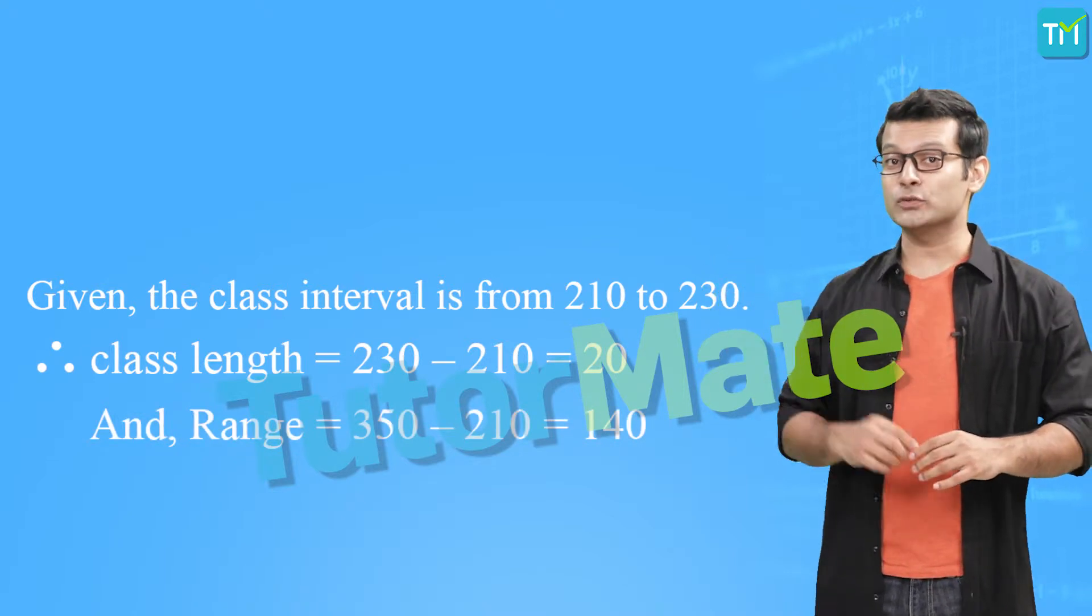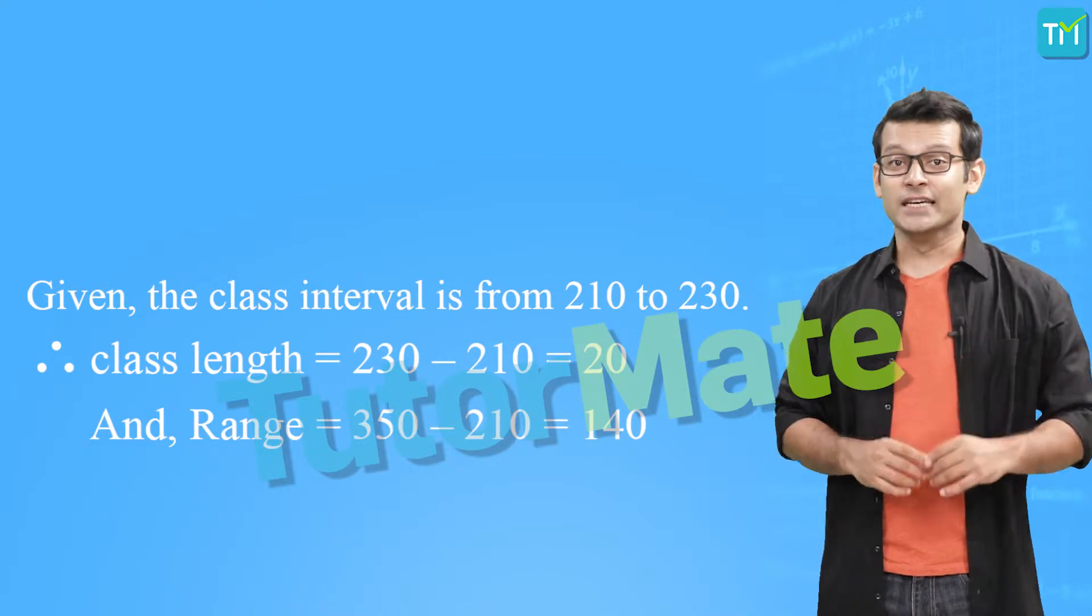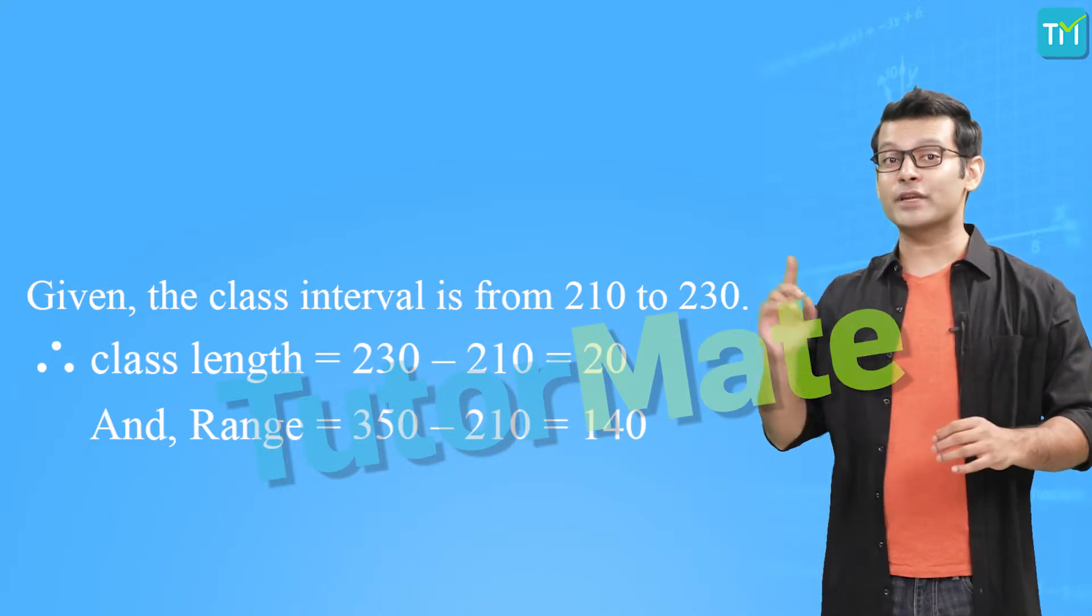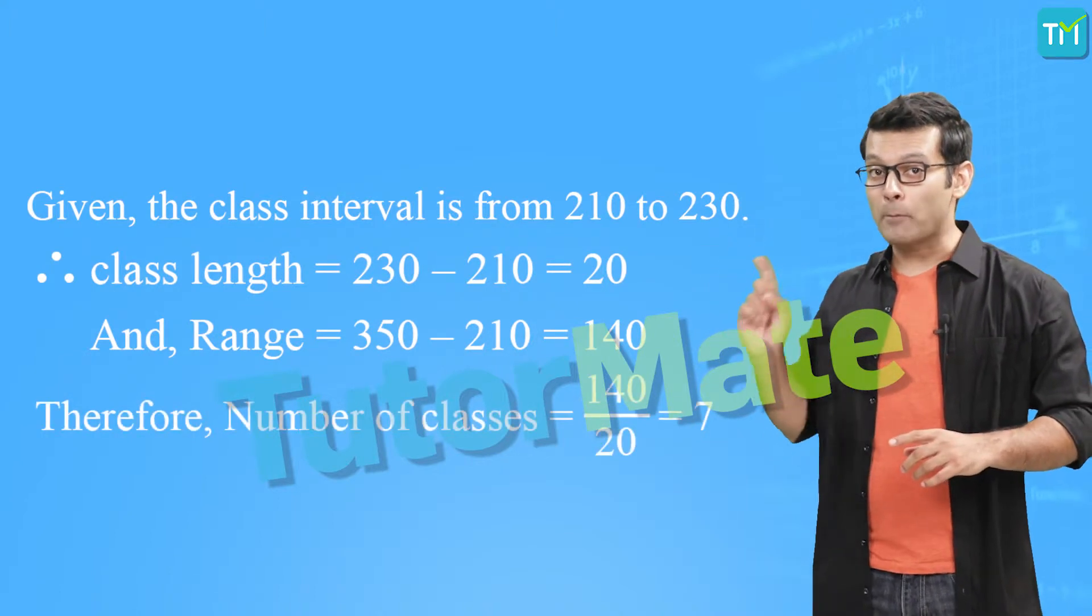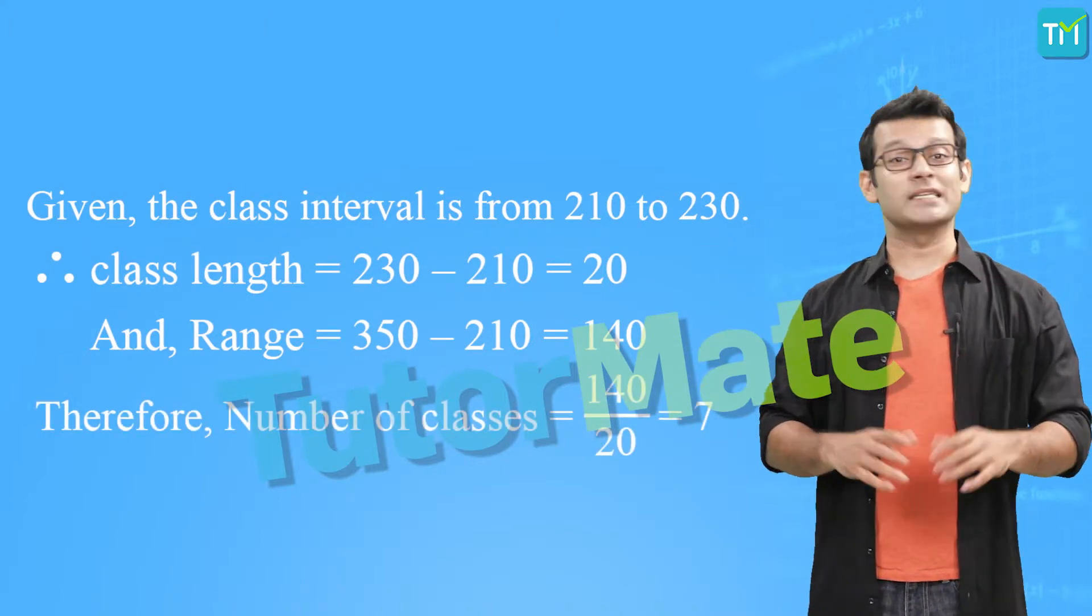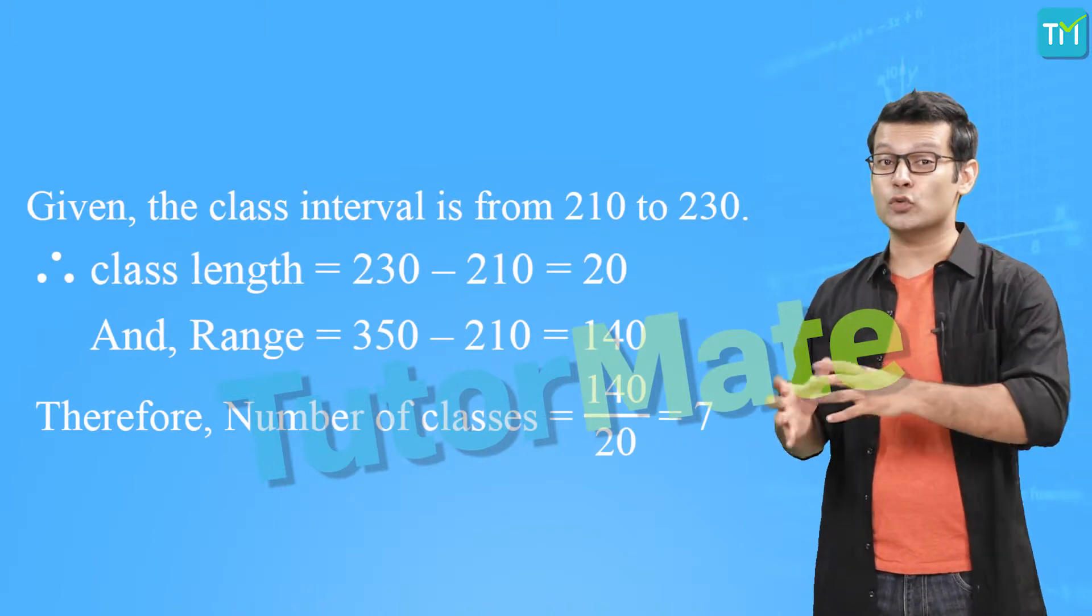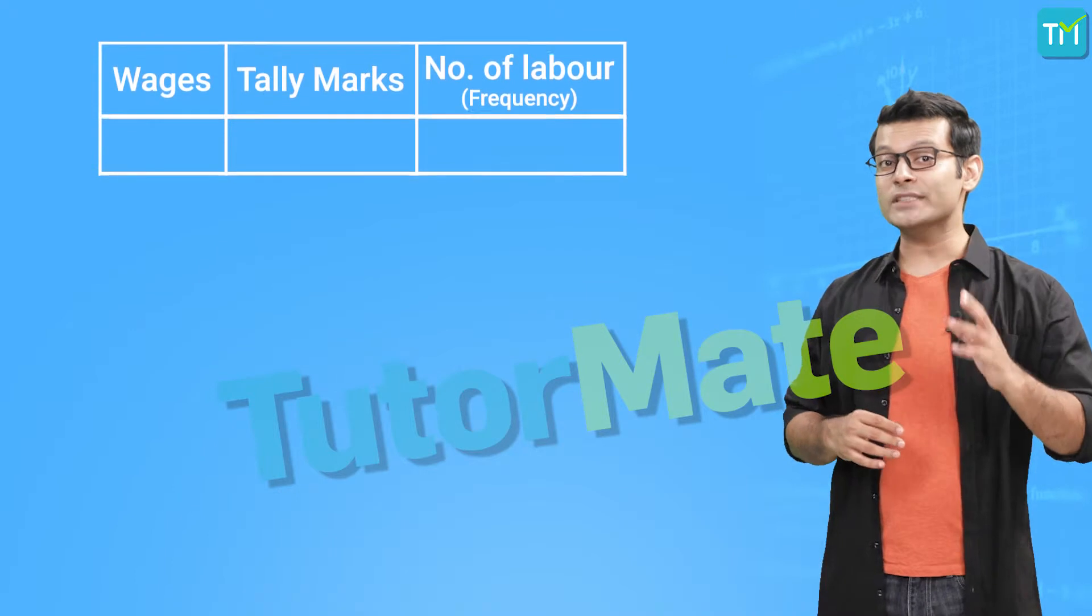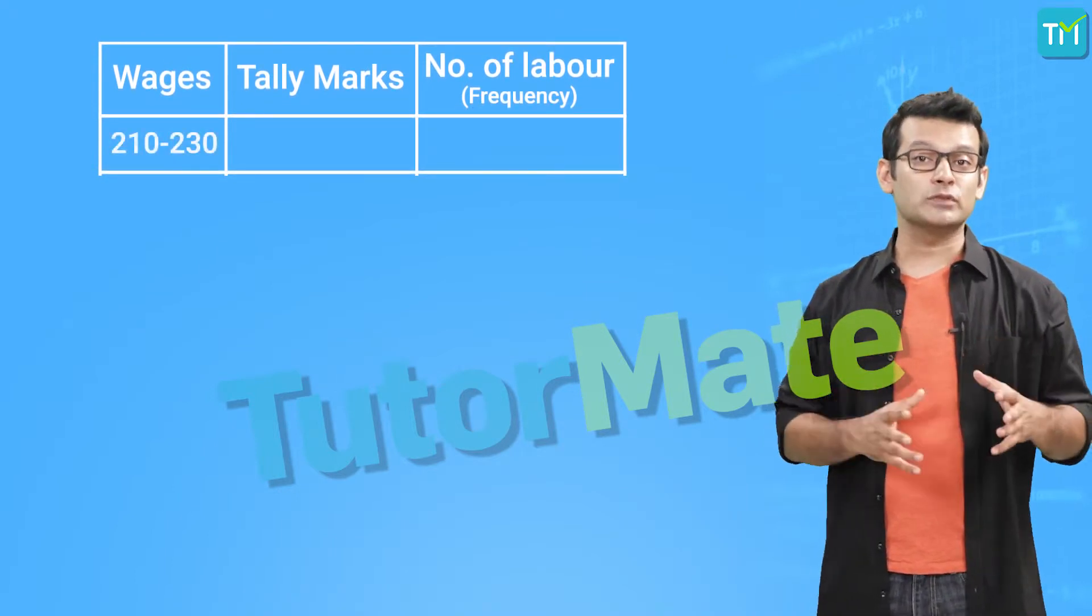Next, the number of classes is given by range upon width, and that is equal to 140 upon 20, which comes out to be 7. This means that there should be seven classes in total. Now since the lowest entry is 210, we will take our first class starting from 210.